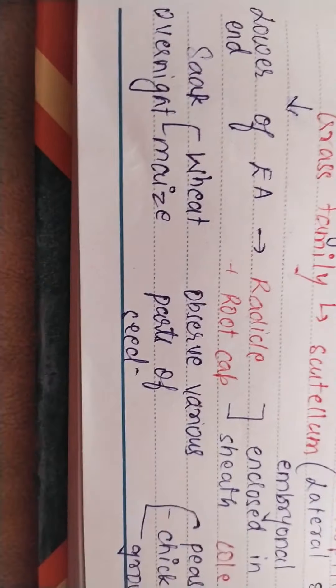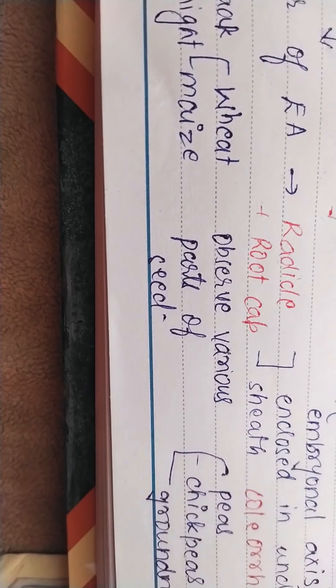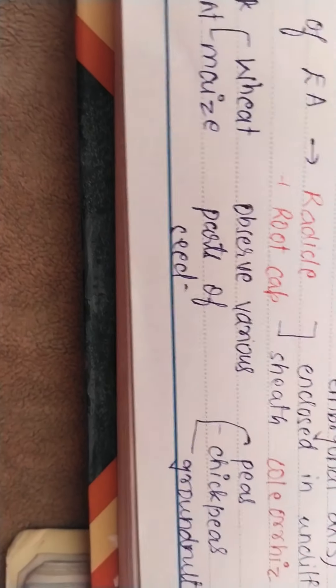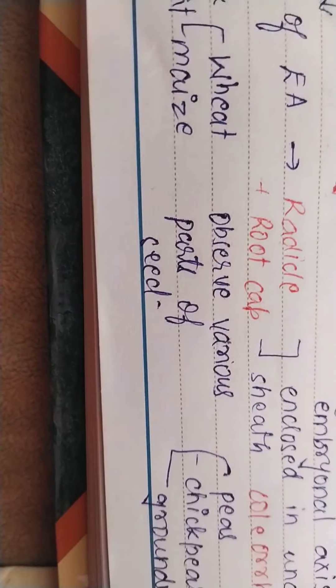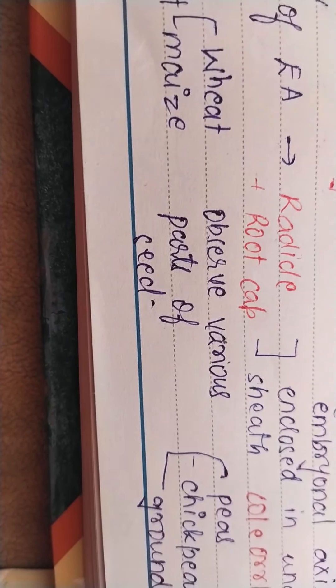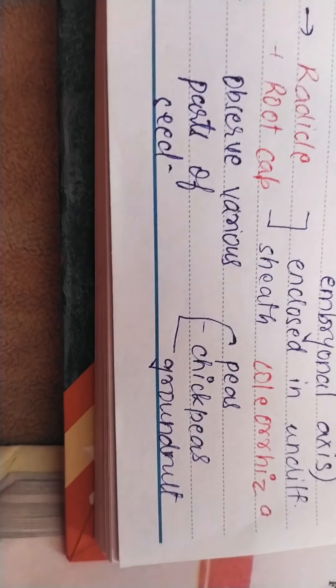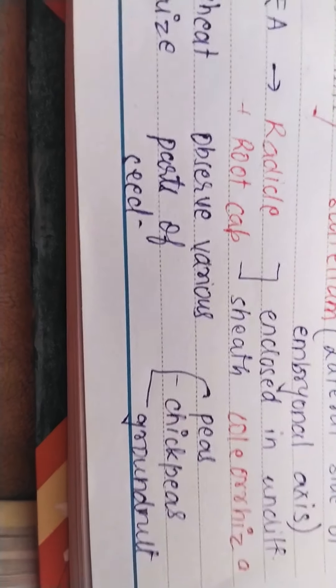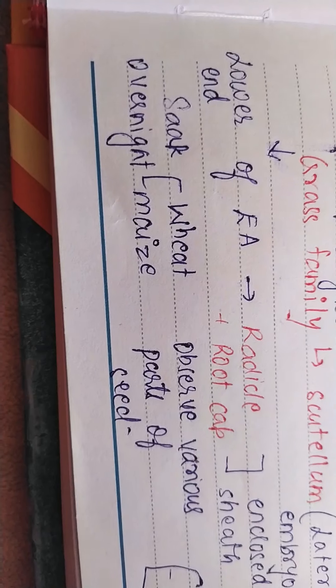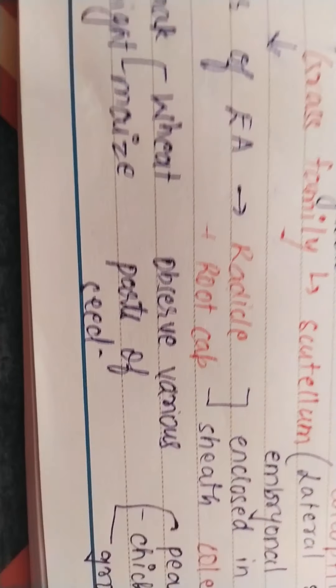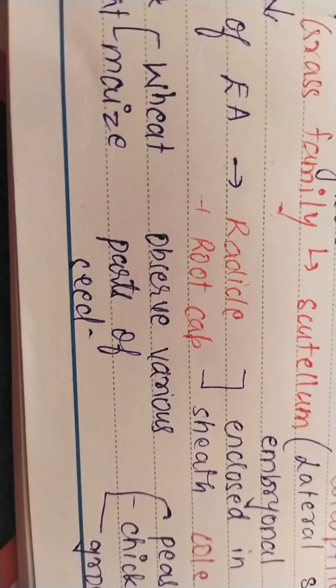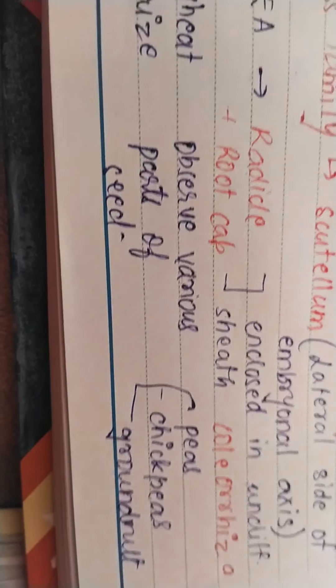To know this more accurately, what I suggest is you should take some dicot seeds and monocot seeds that are easily available in your kitchen. So you can take wheat and maize for monocot, peas, chickpeas, and groundnut, even almonds for dicot. And then just soak them overnight in water. Next day observe various parts of seeds.